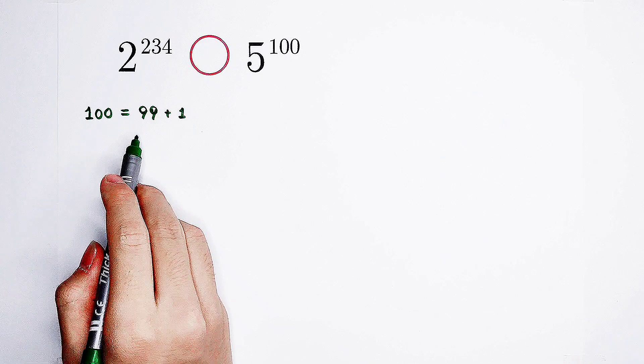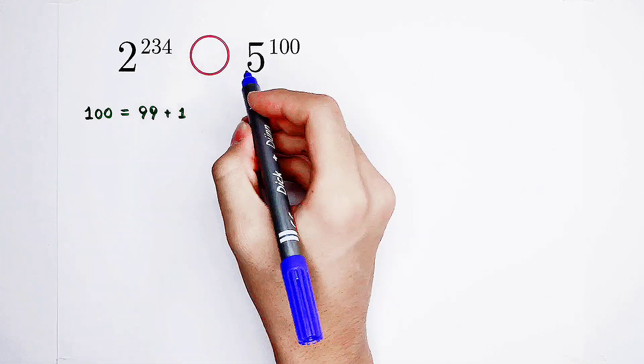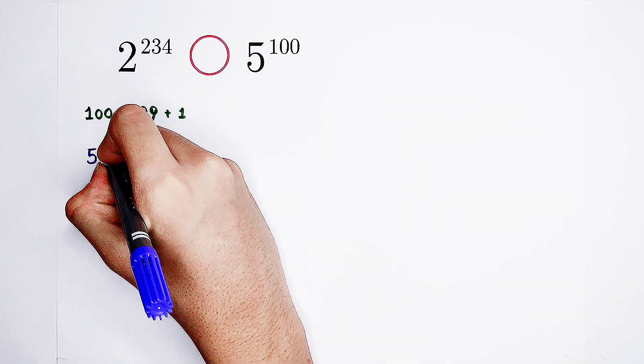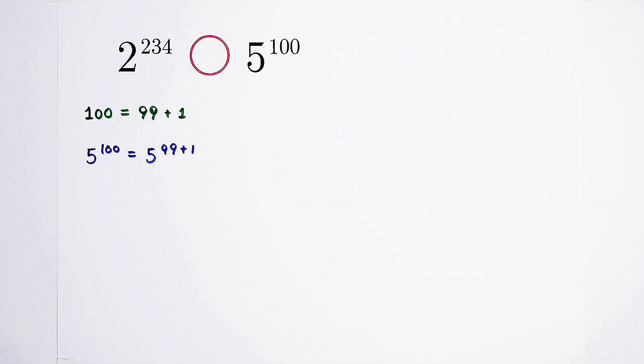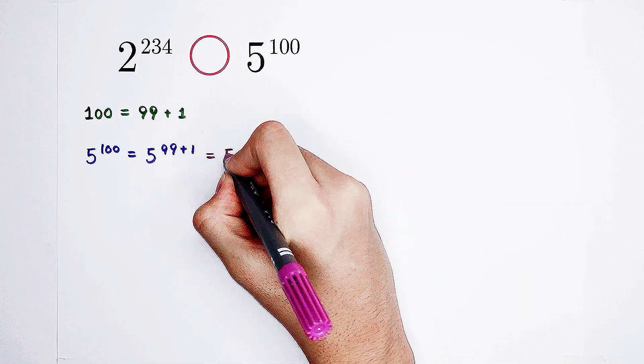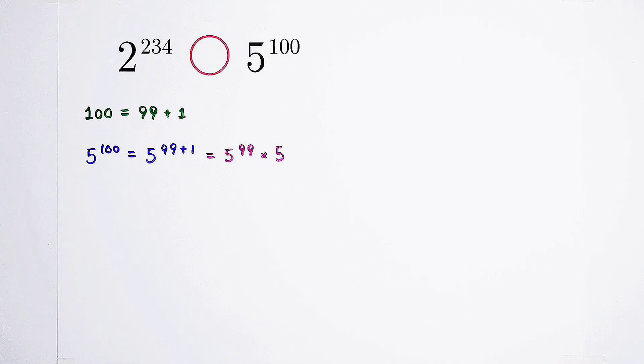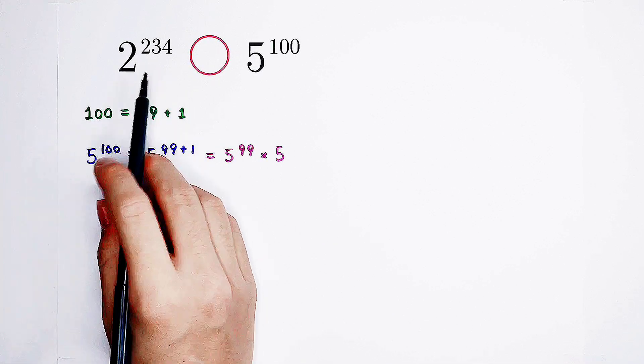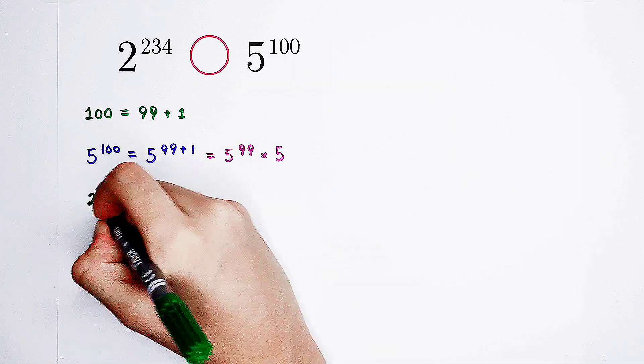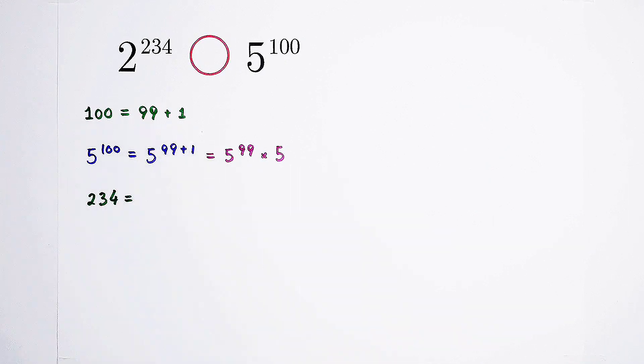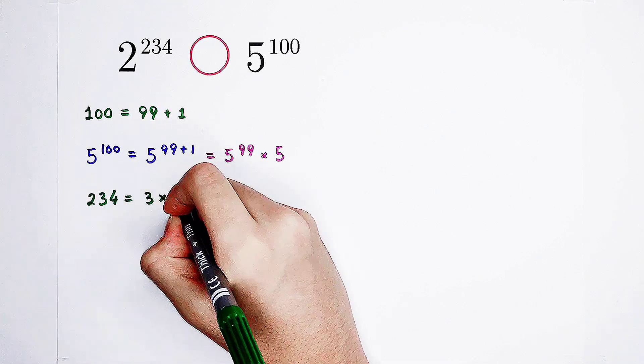This 100 actually, it can be written as 99 plus 1. And this 99 is going to be a multiple of 3. So this 5 to the power of 100 is going to be 5 to the power of 99 plus 1. 5 to the power of 99 times 5. What can we do next? We have to do something on the 2 power of 234. 234.